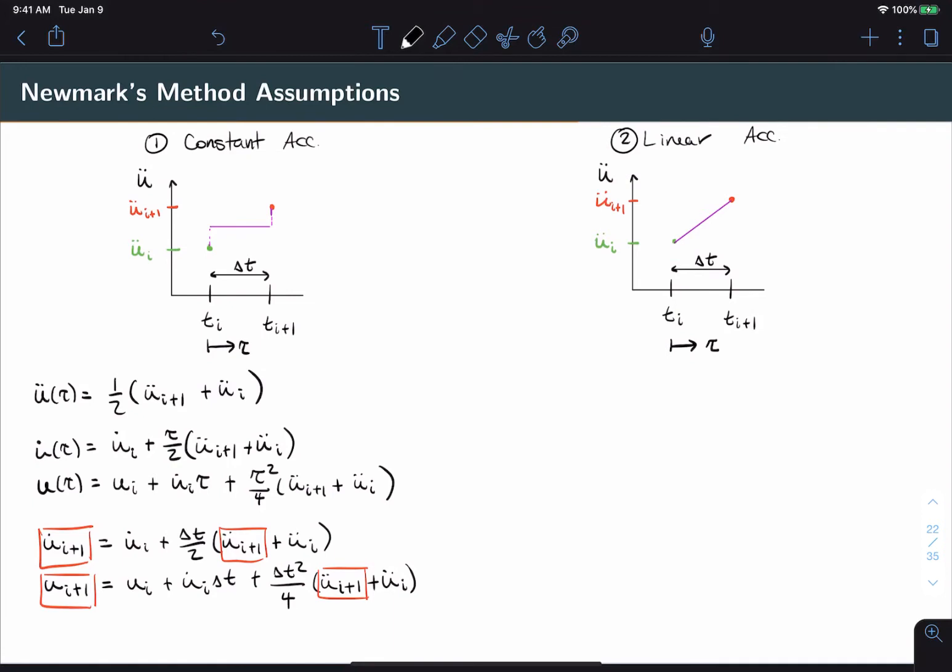Now let's hop over to the linear acceleration case. In this case, u double dot of tau is going to look a little bit different. It's going to describe a linear change from i to i plus one, so we'll actually have tau and delta t in this equation.